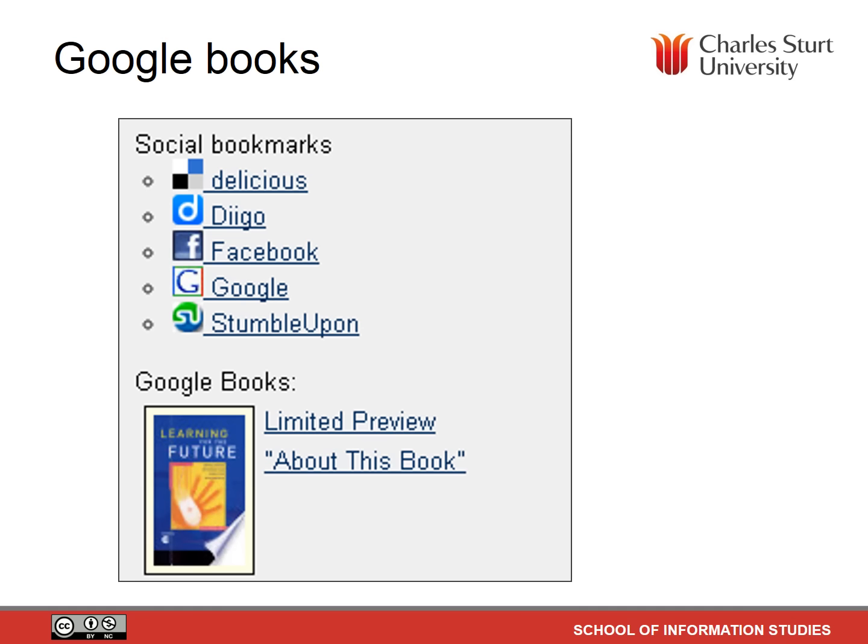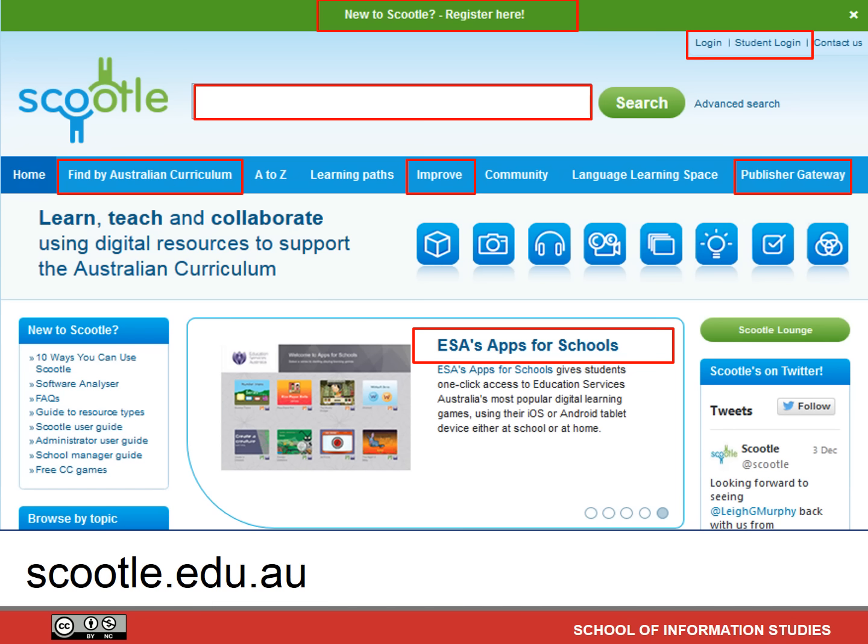The SCIS catalogue bibliographic record display provides a link to Google Books, where sometimes the entire book is viewable, or a portion of the book is viewable, and 'about this book' information is available. There are also links from SCIS search results with lists of relevant books, journal articles, web page citations, links to related works, and full text when available. This helps you with finding resources for the task due 18th of April.